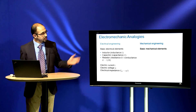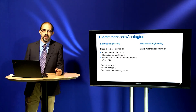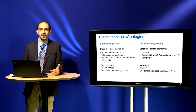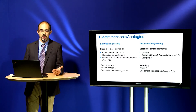If I talk about mechanical elements, again we have three basic mechanical elements: mass, spring — we define as stiffness or compliance — and dashpot, meaning damping. The field variables in this case are velocity and force, and the mechanical impedance can be defined as the ratio between the force and the velocity.